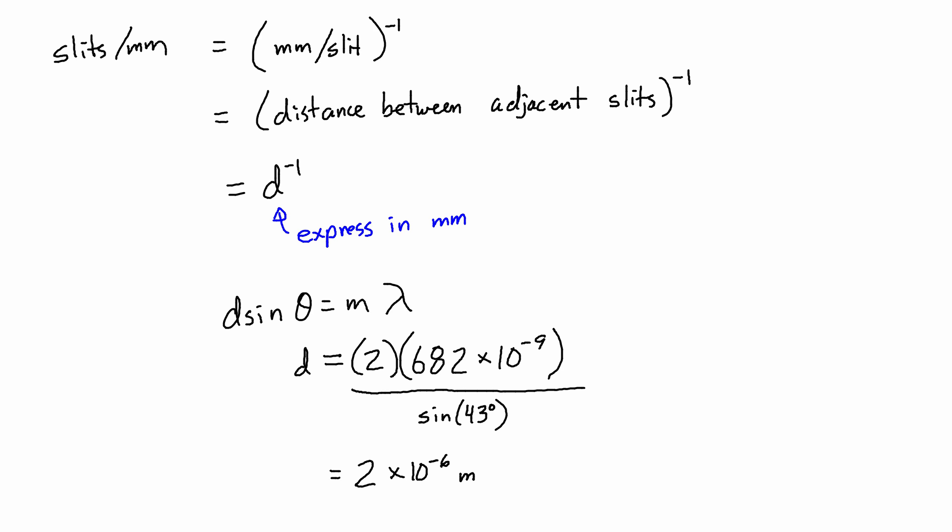However, to get slits per millimeter, I should express d in millimeters before inverting it. So if I'm going to be rigorous about converting this, then I want to divide out the meters. So I put 1 meter on the bottom, and that's equal to 1,000 millimeters. So I multiply by 1,000, and I will get 2 times 10 to the negative 3 millimeters between each pair of adjacent slits.